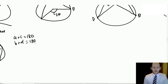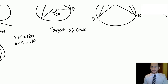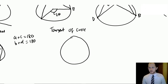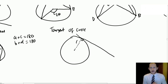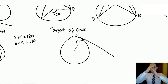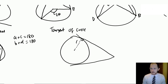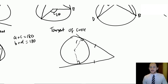Two more rules to do with tangents: first, a tangent and the radius at the point of contact always meet at 90 degrees — any time you have a tangent, the radius from the centre will always be perpendicular to it. Second, tangents drawn from the same external point are the same length. That's it for circle theorems — incredibly common and very useful.